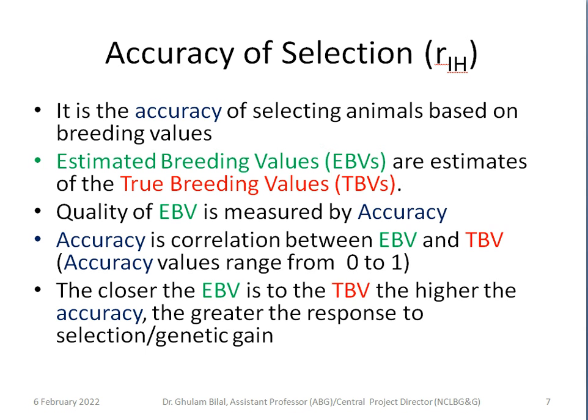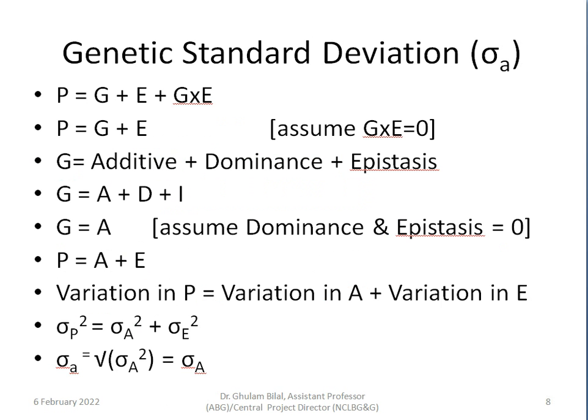Genetic standard deviation is a measure of genetic variation in a population for a given trait. If we have more variation we will get more genetic gain; if less variation, we will get less genetic gain.